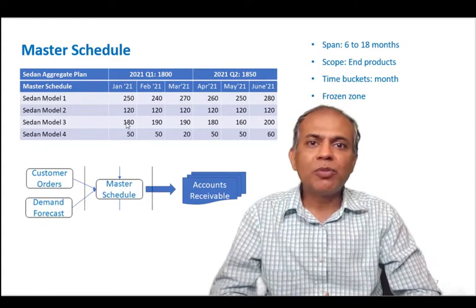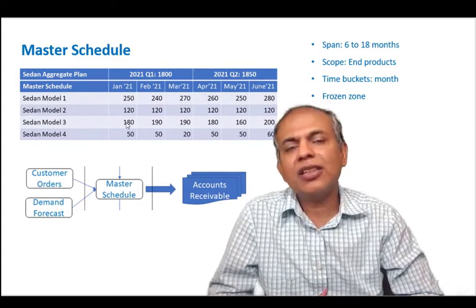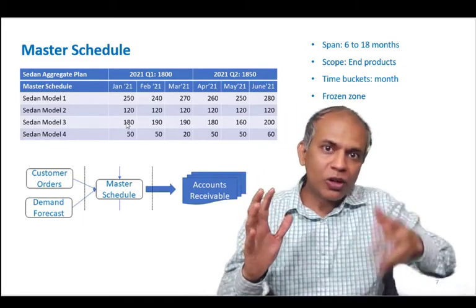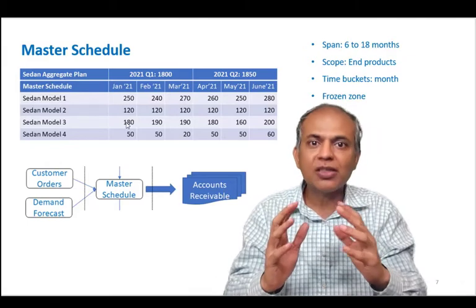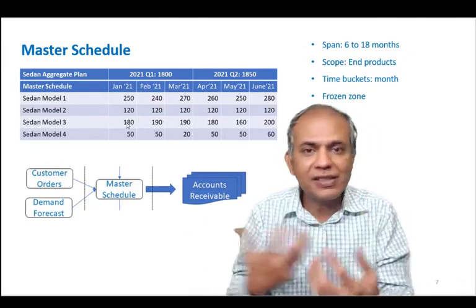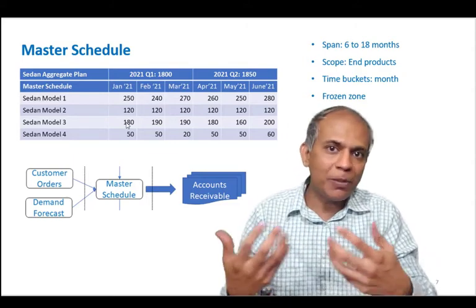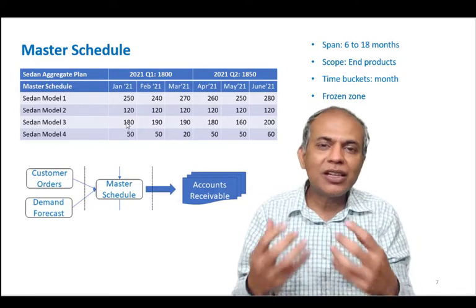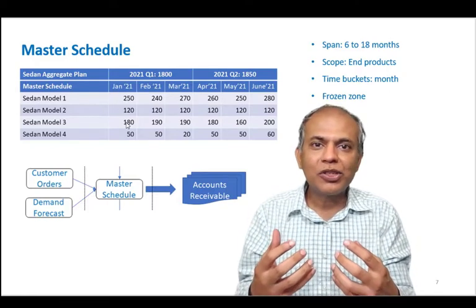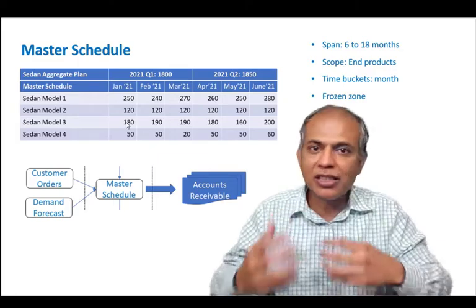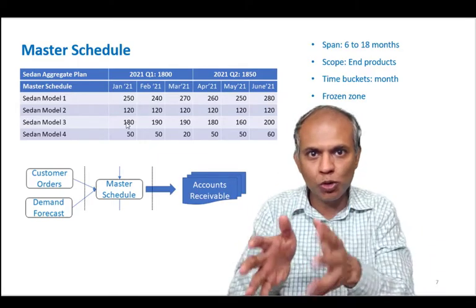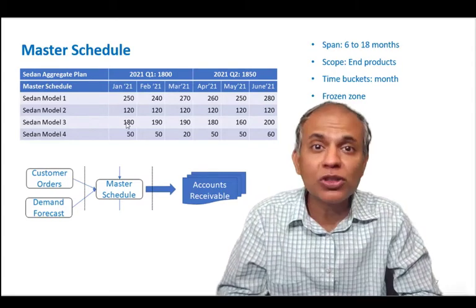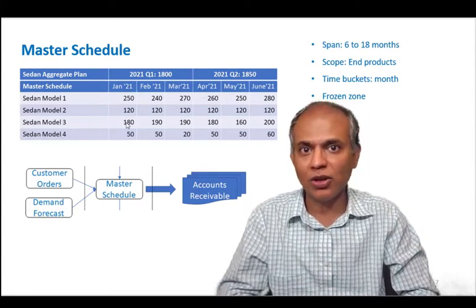One last concept before we end: companies generally have a tendency to freeze some part of the master schedule. They don't revise it again and again, because revising in the short term — revising daily plans — creates disruption or inconsistency in the plan, which makes it difficult for the business to continuously keep adjusting. So the first two or three weeks, businesses freeze, and that's called the frozen zone of MPS, or master schedule.